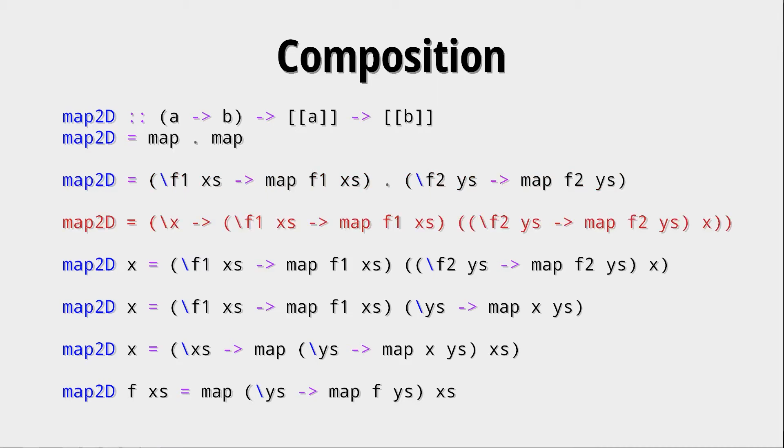In the next step we do the equivalence of the dot operator, and in the following step we take this free variable x and put it into our argument list of map2d. Now a more interesting thing is happening, because the free variable x is applied to the anonymous function definition, f2ys to map f2ys. So x would be the first argument of this function, which is f2. So we replace f2 by x, and of course f2 is now missing from the argument list of this anonymous function.